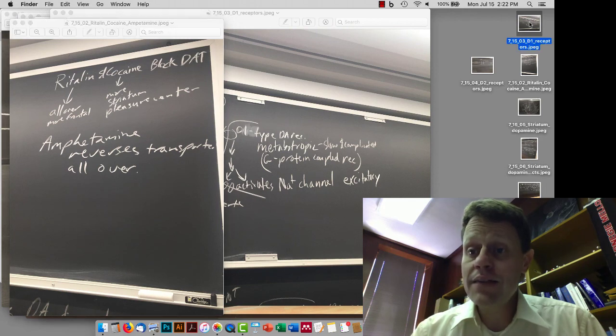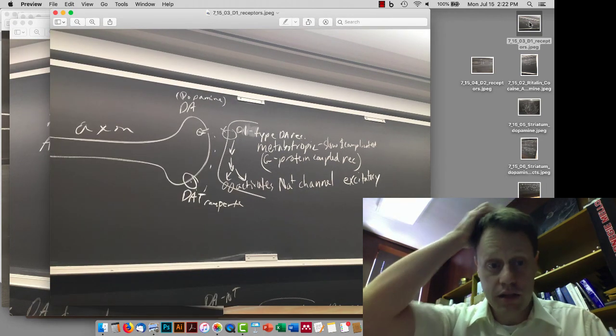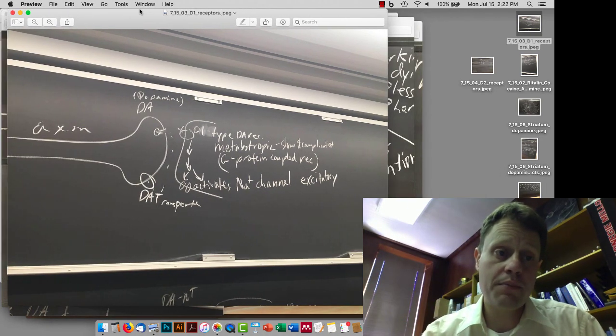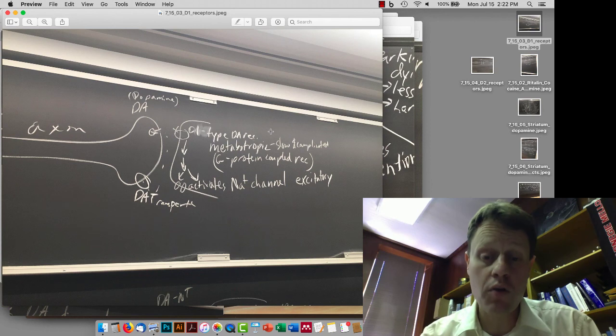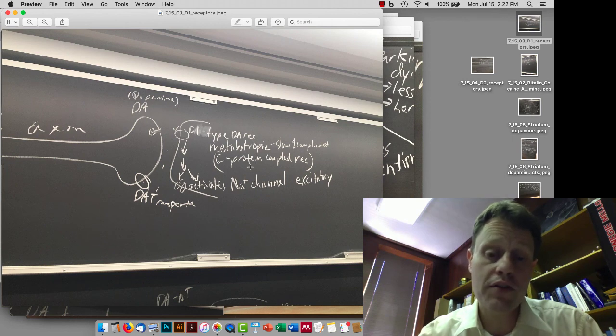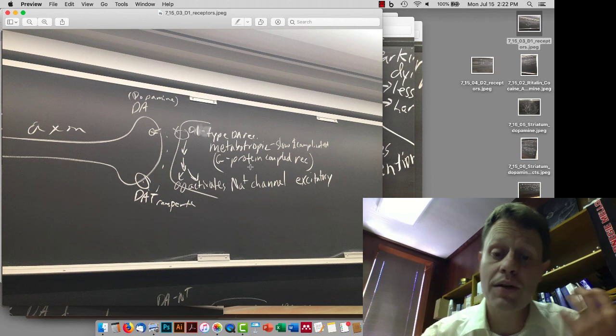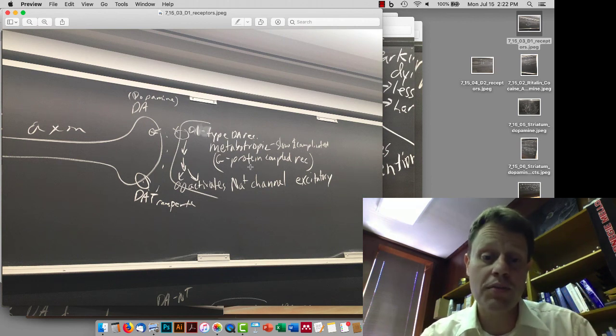We then discussed, in particular, the two different types of dopamine receptors. The first are the D1 type dopamine receptor. These are metabotropic, which generally means that they are slow and have very complicated effects. They're G-protein coupled. That's a term that you don't need to know for this class, but if you've ever taken another bio class, neurobiologists say metabotropic, the same time cell biologists say G-protein coupled.